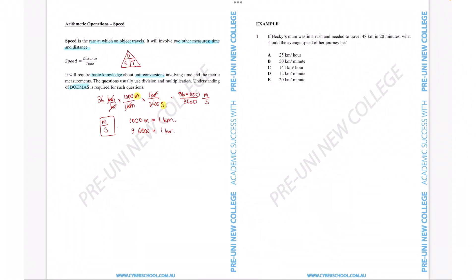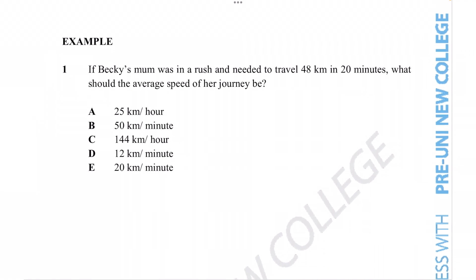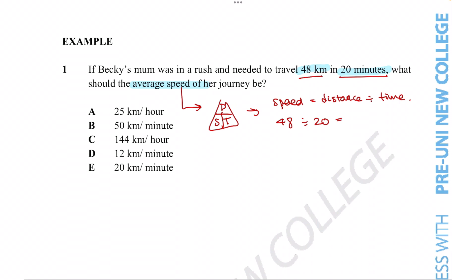Hopefully that covers the most important tips and techniques for speed-related questions. Let's use them in an example. We're told Becky's mom was in a rush and needed to travel 48 kilometers in 20 minutes — what should the average speed of her journey be? We are asked to find speed, and using the distance-speed-time triangle, speed equals distance divided by time. We're given both measures, so we divide 48 by 20 to get 2.4, giving us 2.4 kilometers per minute.